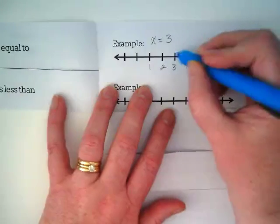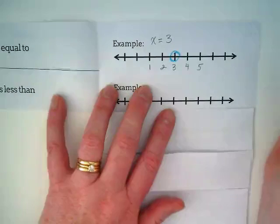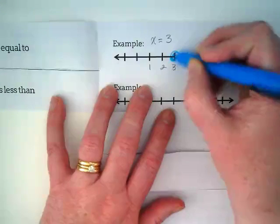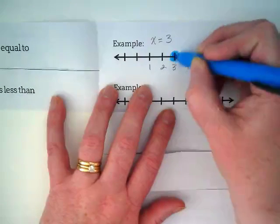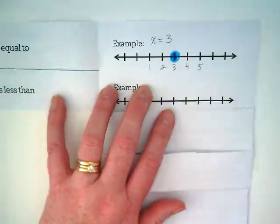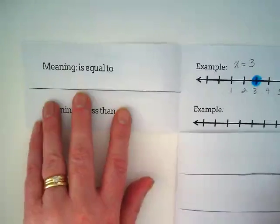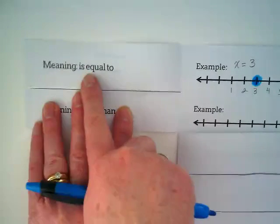I'm going to circle the number and then ask, is it solid or empty? Solid. And if you see on the left side, the equal sign, as you know, means is equal to.